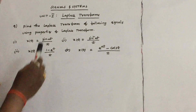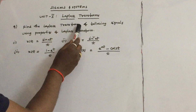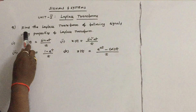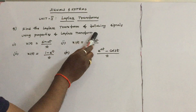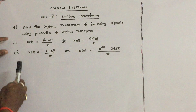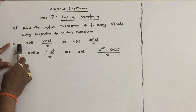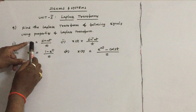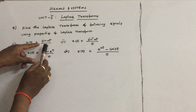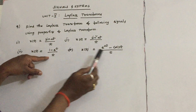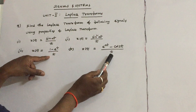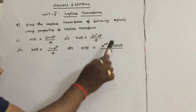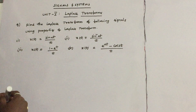Let us see this problem. Find the Laplace transform of the following signals using properties of Laplace transform. Here there are 4 questions given. In all the given questions, there is T in the denominator. Let us see which property we have to use and how to solve these problems.